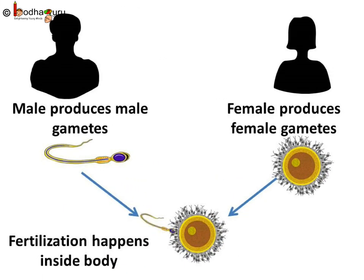In animals, the internal fertilization occurs in the reproductive organ in the female body. The male produces the male gamete and the female produces the female gamete.